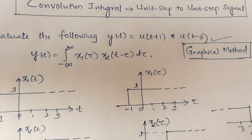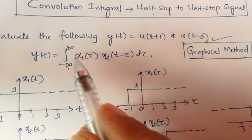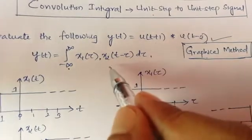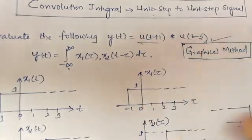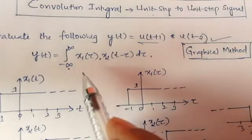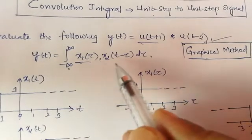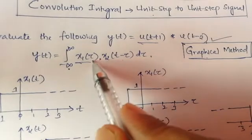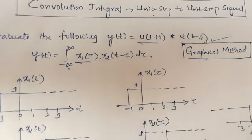We are going to represent the convolution operation graphically. The formula is: y(t) = integral from minus infinity to plus infinity of x1(τ) multiplied by x2(t−τ) dτ. From this equation, we keep the first signal constant and shift the second signal. After each shift we multiply then add — that is the process of convolution between two continuous time signals.